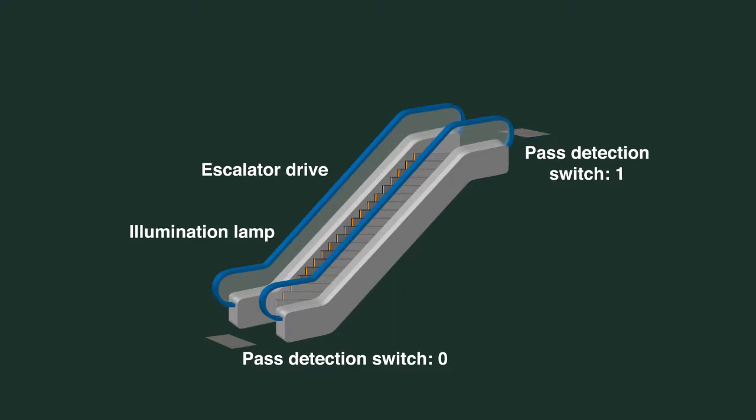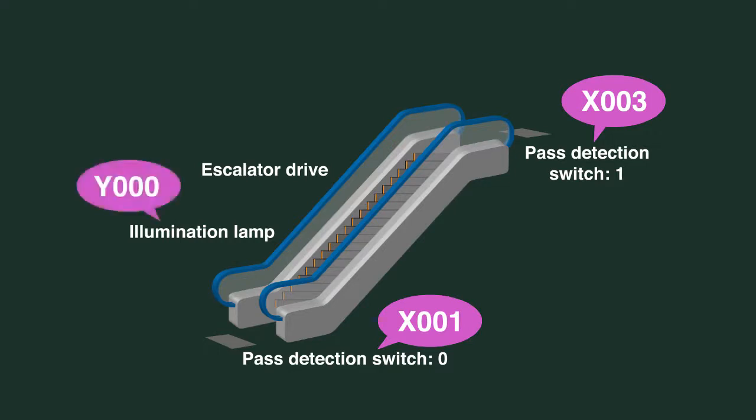So on the input side, we have x1, which is the entrance sensor, and x3, which is the exit sensor. On the output side, we have y0, which is the lamp, and y3, which is a motor that drives the escalator.